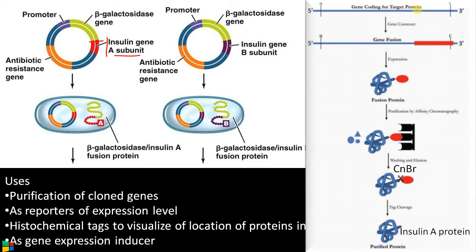The gene of interest is fused to the tag protein or fusion partner, giving a fused product — insulin A protein with beta-galactosidase. Protein is extracted from the sample and passed through an affinity column containing an antibody with strong affinity for beta-galactosidase. All other proteins are eluted, while the fusion protein remains in the column and is finally eluted. In the case of insulin, cyanogen bromide is used to cleave the insulin A protein from the fusion protein at methionine residues, yielding purified insulin A protein. The same procedure is applied for the B chain. Thus, fusion proteins enable easy identification and purification of the protein of interest.